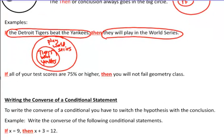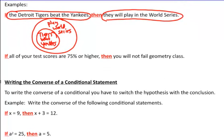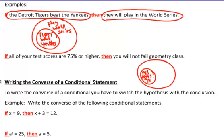We're going to make a Venn diagram for this one too. It says: 'all your test scores are 75% or higher.' So we make a circle, make another circle, and we have 'all tests 75%' in the little circle. What is in the big circle: 'pass geometry.' And that is how you make a Venn diagram for statements.